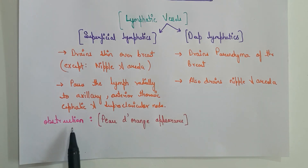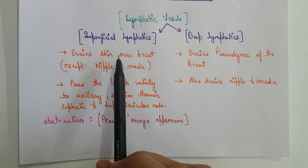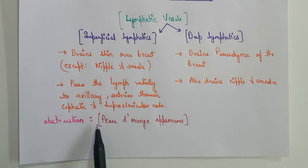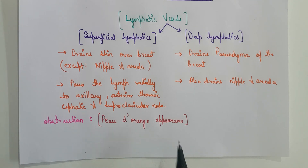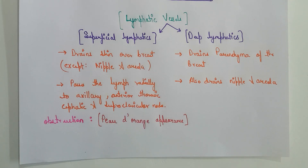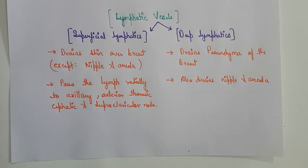The obstruction of the superficial lymphatics of the breast may cause edema over the breast and an orange-like appearance known as the peau d'orange appearance. It is caused due to obstruction of the superficial lymphatics. That was all about the lymphatic vessels of the lymphatic drainage of the breast.